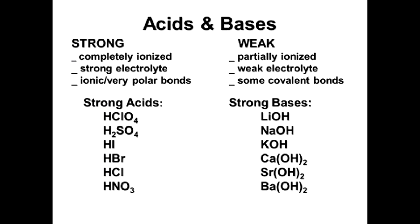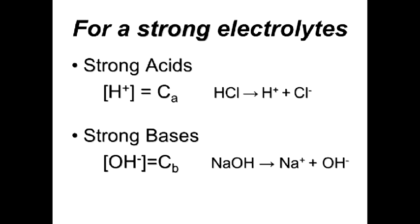Some examples of strong acids and strong bases and the difference between them. Strong acids have a concentration of hydrogen ions equal to the acid concentration, because each acid molecule dissociates and forms H⁺ ions. In strong base solutions, the concentration of OH⁻ ions is equal to the base concentration.